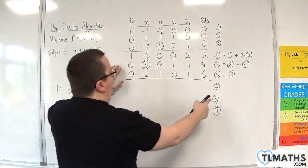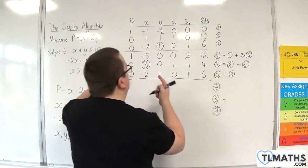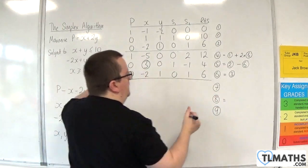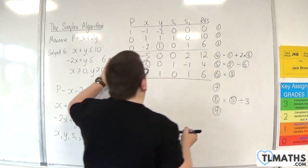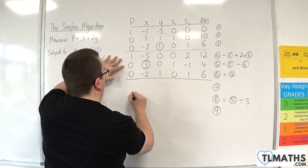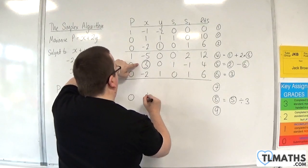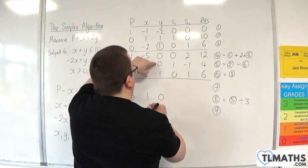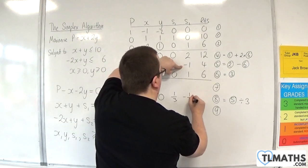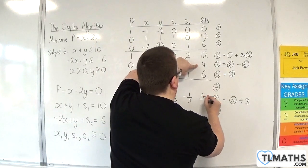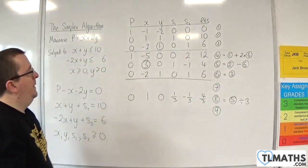So row 8 is going to be row 5 divided by 3. So we've got 0 divided by 3. 3 divided by 3. 0 divided by 3. 1 divided by 3. Minus 1 divided by 3. And 4 divided by 3.